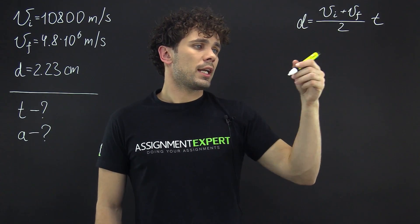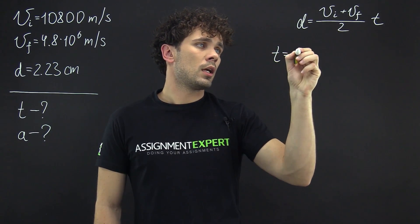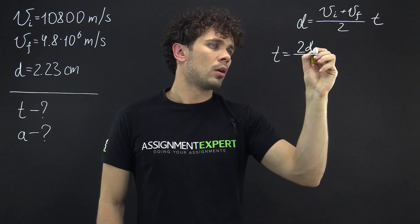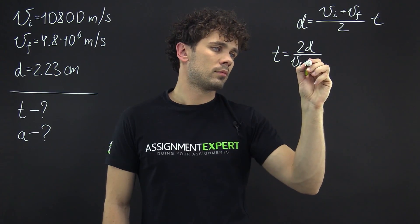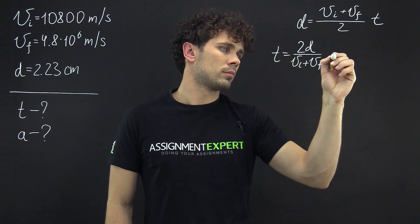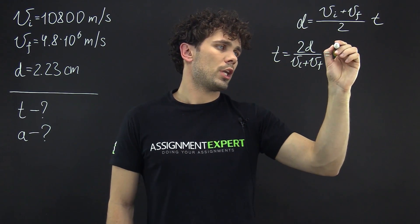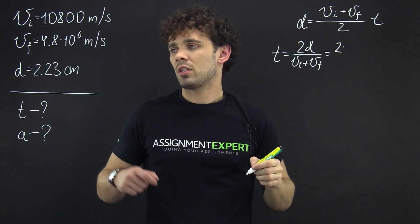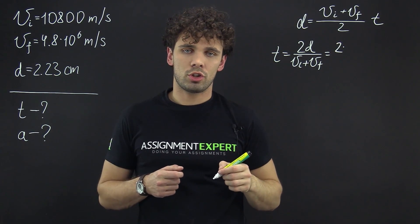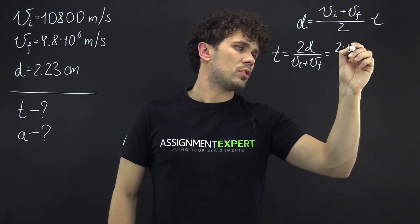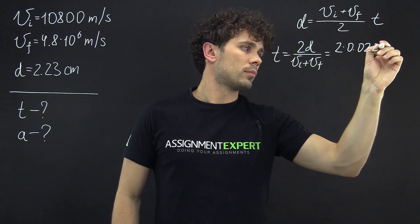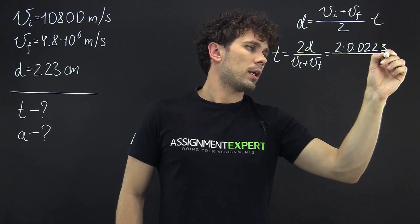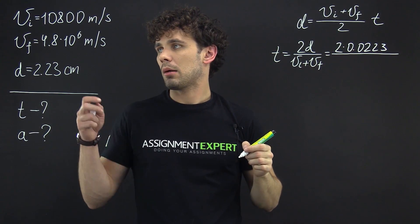So from here we get t as 2d over vi plus vf. In our case we have 2 times the distance but here we need to transition to meters. So we have 0.0223 and in the denominator we have the sum of our speeds.